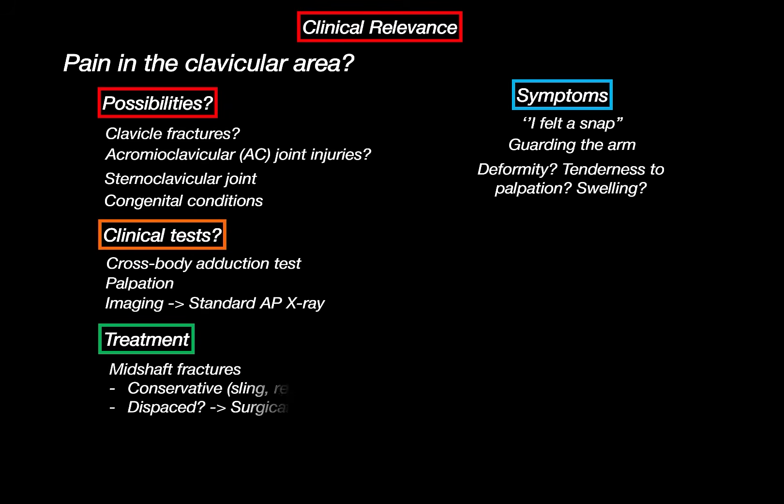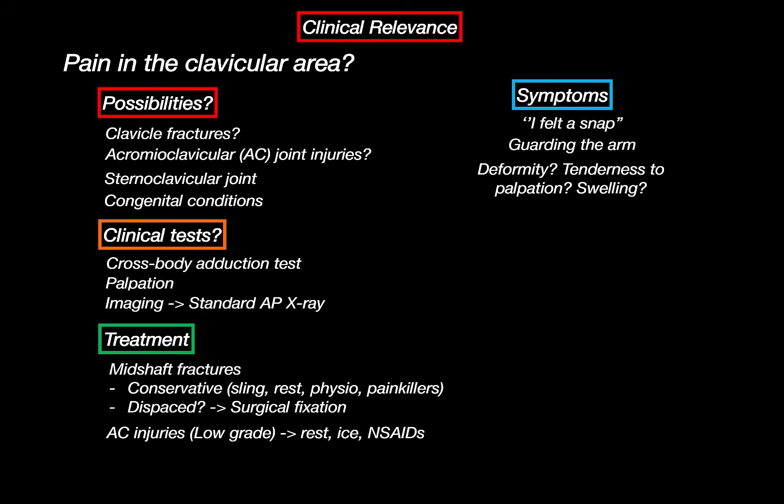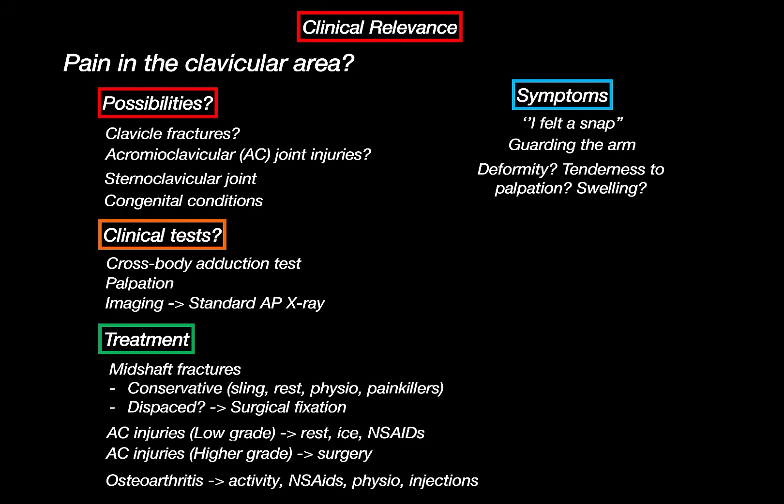For imaging, start with a standard AP X-ray of the clavicle. For joint problems or subtle fractures, CT can give more detail. If you're suspicious of soft tissue or cartilage issues like in osteolysis, MRI helps. In high energy trauma, chest imaging might be needed to rule out rib fractures or pneumothorax. There's also the piano key test — push down on the AC joint to confirm dislocation — as well as O'Brien's test. Treatment depends on the cause. Most mid-shaft clavicle fractures are treated conservatively with a sling, rest, and physio. If displaced, shortened, or tenting the skin, surgical fixation may be needed, especially in athletes. AC joint injuries are graded: low grades (type 1 and 2) are treated with rest, ice, and NSAIDs, while higher grades (type 3 and above) might need surgery. For osteoarthritis or osteolysis, activity modification, NSAIDs, physiotherapy, and occasional injections are first-line; if those don't work, a distal clavicle excision — open or arthroscopic — can relieve pain.